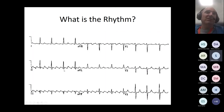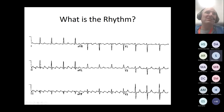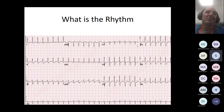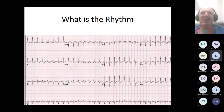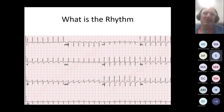Atrial flutter has a classical sawtooth appearance and is typically regular — rather than the irregularity of fibrillation. The sawtooth appearance is often best seen in lead II, and sometimes in V1. Classic SVT is just fast and very regular, with no flutter waves and no clues as to the underlying problem — this is a reentrant tachycardia.